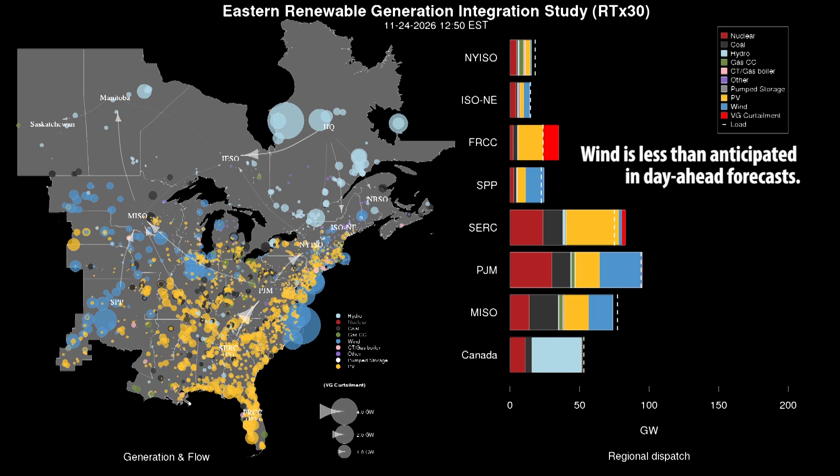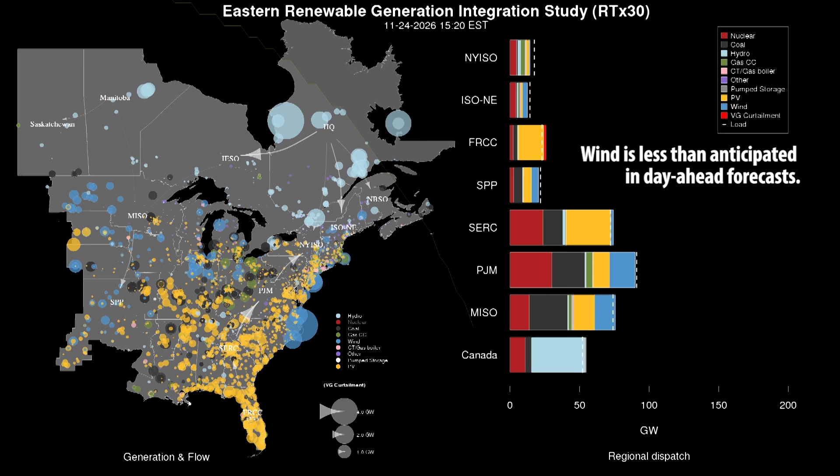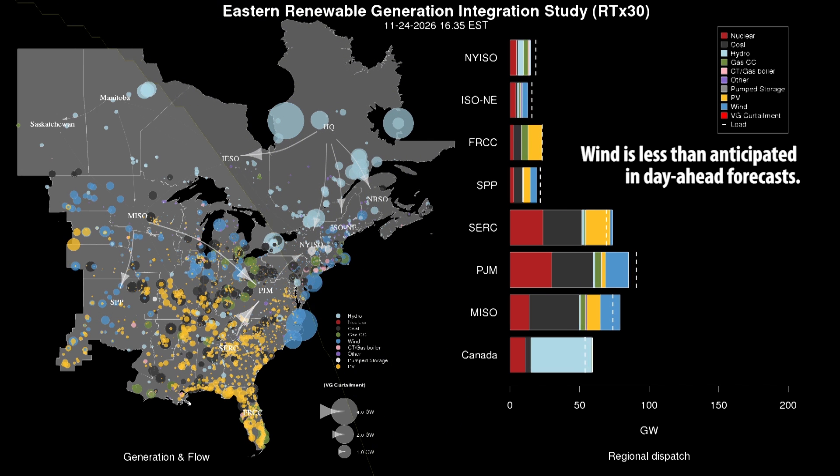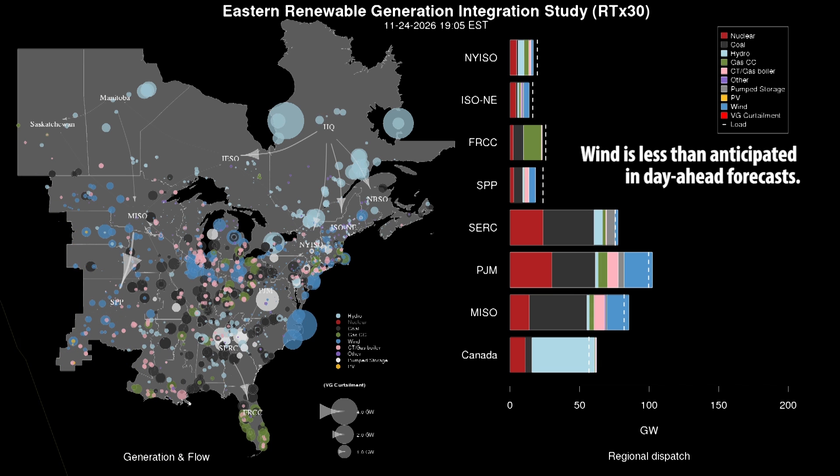Over the next six hours, the system experiences a 35 gigawatt forecast error and solar generation peaks at 100 gigawatts. To manage this change in wind, the setting sun, and a rapidly growing evening load,